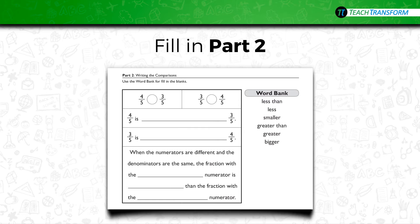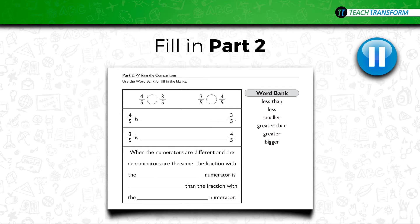In part two on your sheet, you're going to write the comparisons in symbols and in words, and you're going to write your thinking by filling in sentences using a word bank. Pause the video and fill in part two, then start it again when everyone at your table is finished. You may need to discuss the sentences with your friends sitting at the table. Pause the video now and fill in part two.